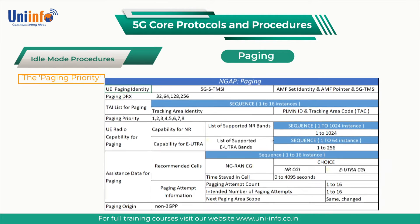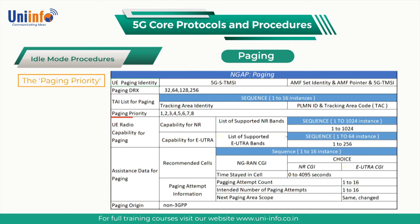The paging priority can be included to prioritize specific paging messages at the base station. The priority can be configured with a value from 1 to 8, where 1 represents the highest priority. The AMF deduces a priority level from the Allocation and Retention Priority (ARP),